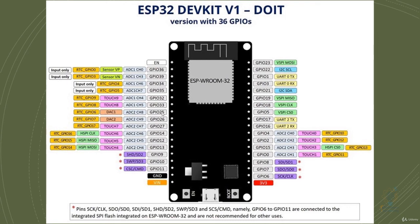Similarly, from this image you can see that pin 25 can be used as a Digital-to-Analog Converter, and pin 26 can also be used as a Digital-to-Analog Converter or Analog-to-Digital Converter. So, depending on what you need and what your end goal is, check this schematic and make sure you choose the pin that fits your need.